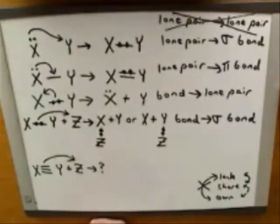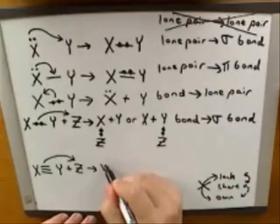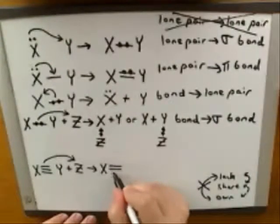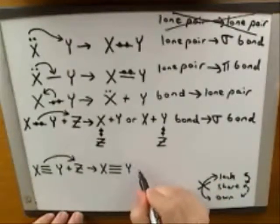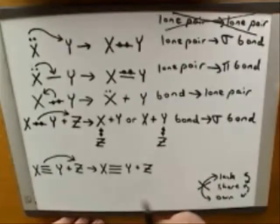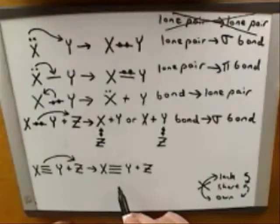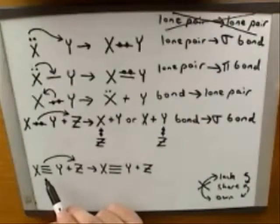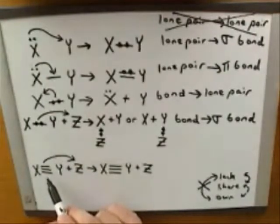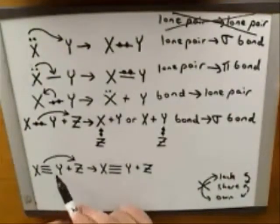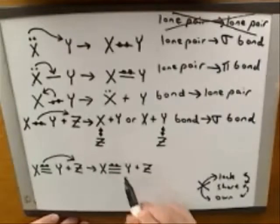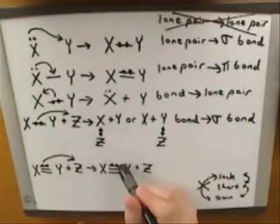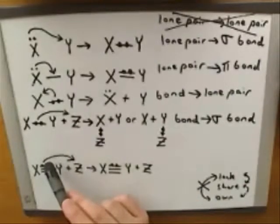Let's try this example. I've started by just redrawing the starting materials, and now we can make some modifications. The tail of the arrow here is coming from the bonds, so we know we're going to be moving a pair of electrons out of a bond. It doesn't matter which of these three bonds you focus on — there's no real meaning to whether the bond is at the bottom, middle, or top of the stack. I'll put the pair of electrons into the top bond arbitrarily and erase the top bond, because the tail of the arrow indicates that the pair of electrons is moving out of that bond.